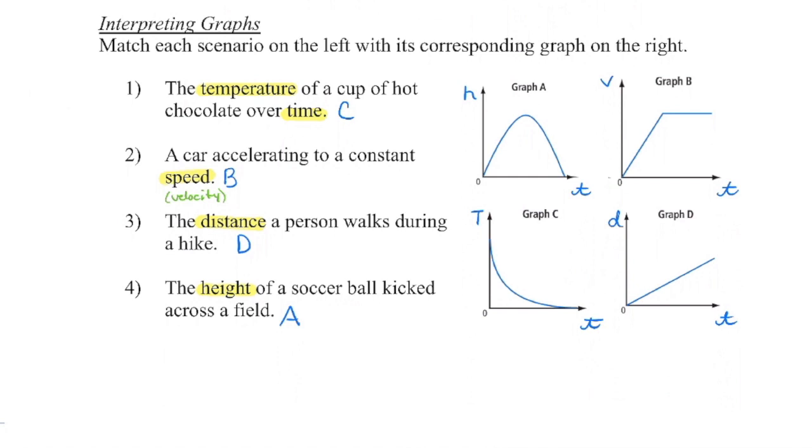That leaves us with two and three as the remaining statements, and graphs B and D as the remaining graphs. Statement number three is the distance a person walks during a hike. I decided that the best graph to represent that would probably be this one, where we can see that as time is passing, this is the distance they are away from their starting point. So this is assuming that the person is traveling at a constant rate, because we know they have that straight linear line. That leaves us with graph B, which I matched up with the car accelerating. So in this particular case, we can see that we are accelerating. We're increasing in speed at a constant rate. And then once we get to the speed that we want to travel at, we are moving at that constant speed.